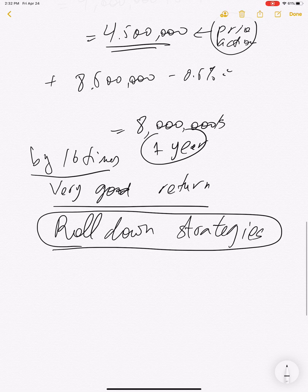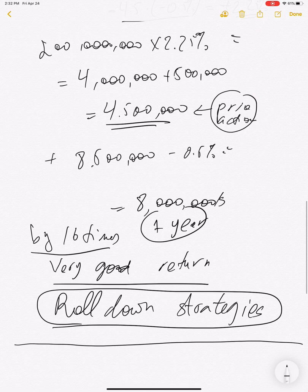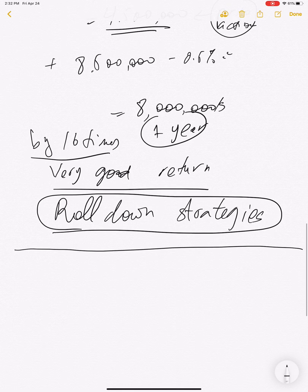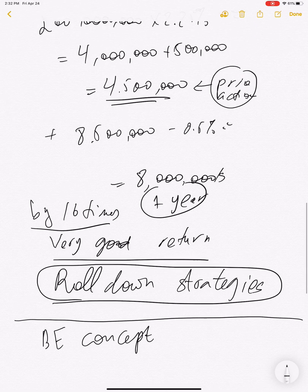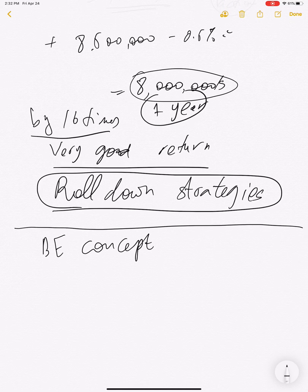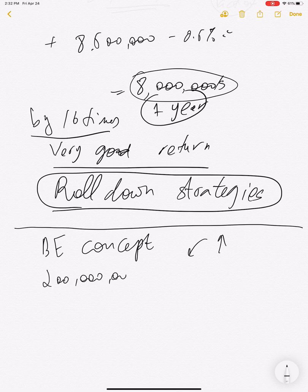Now there is something coming from the break-even concept. You want to ask: given that I'm making $8 million, what has to happen for me to actually lose that income? You lose your income if, instead of the curve staying flat or falling, the curve goes up against you.